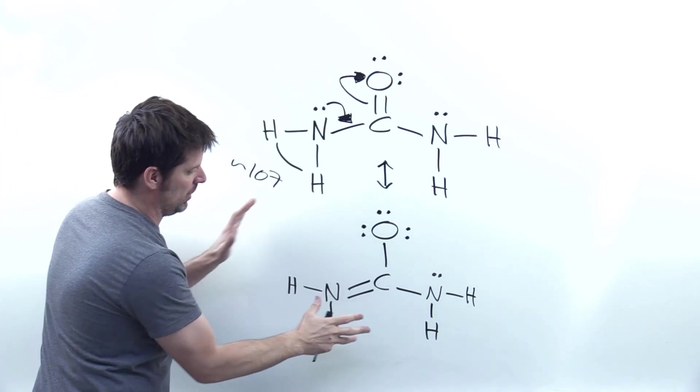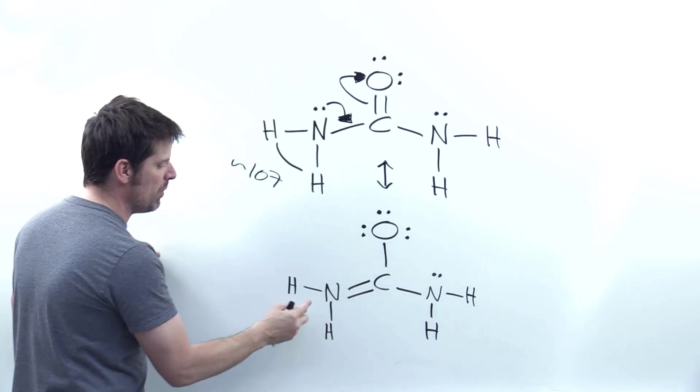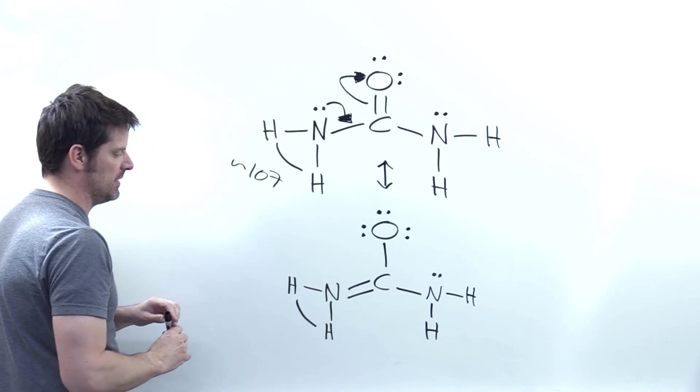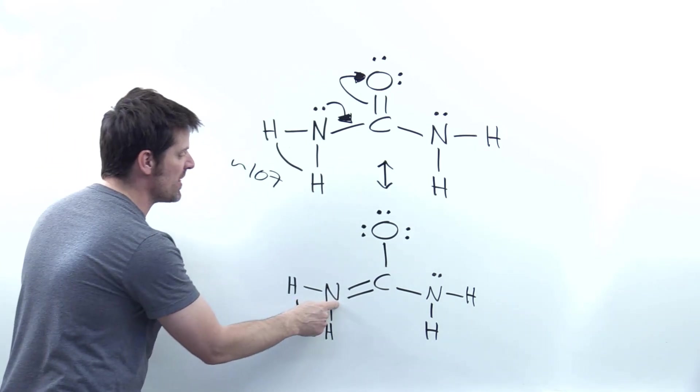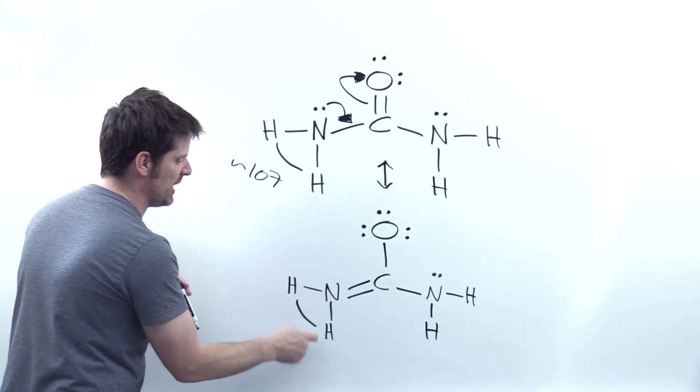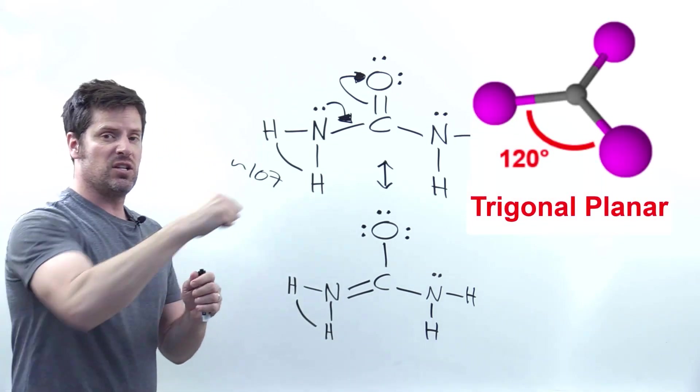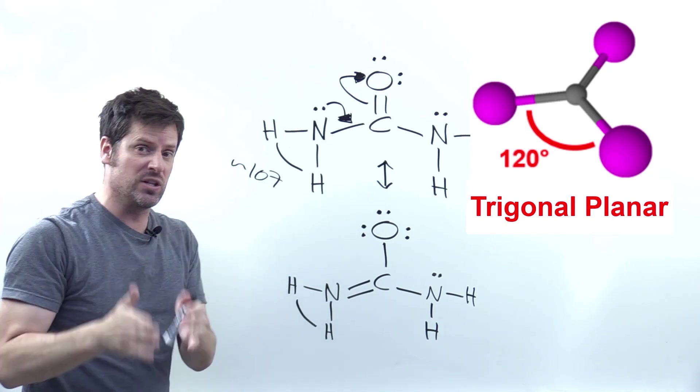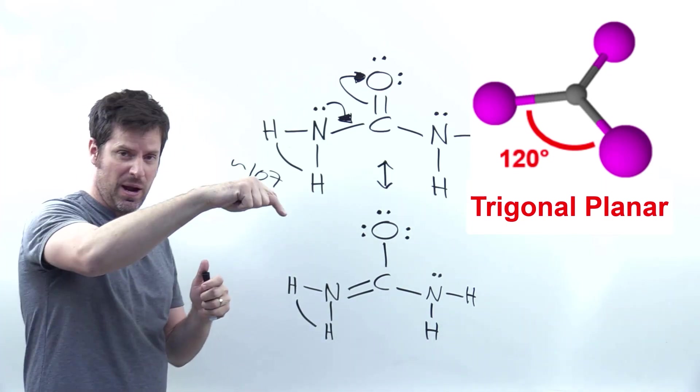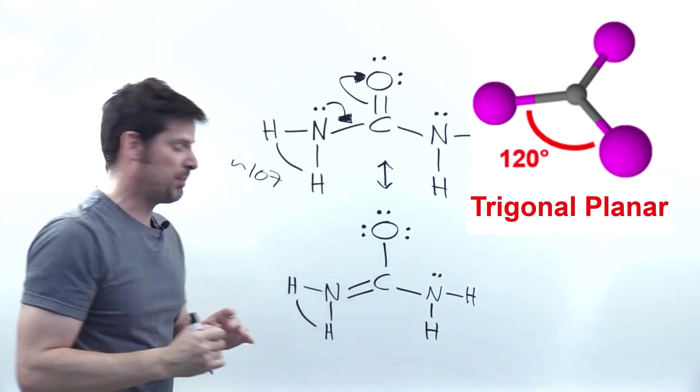What if this molecule was completely unmovable and had no resonance? What would the bond angle between these hydrogens be? Well, that's different. Now, I've got a nitrogen that's only surrounded by three things: hydrogen, hydrogen, and carbon. The ideal bond angle around such an atom is three things in a complete triangle plane, or in other words, trigonal planar geometry, separated by 120 degrees per group.